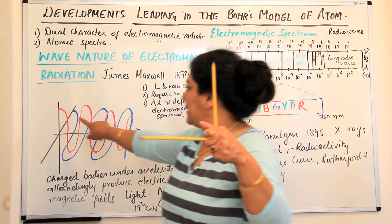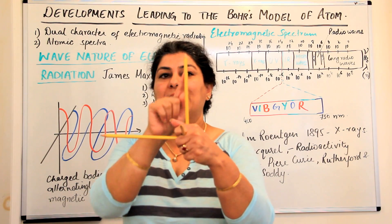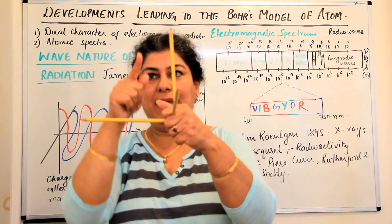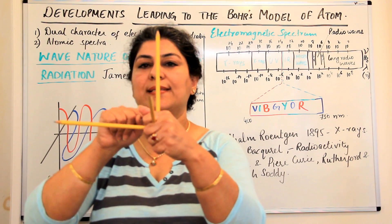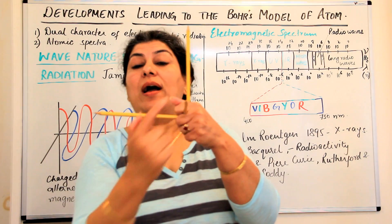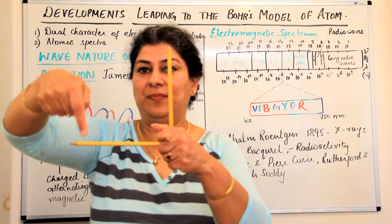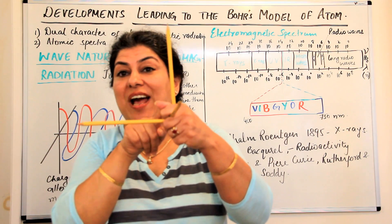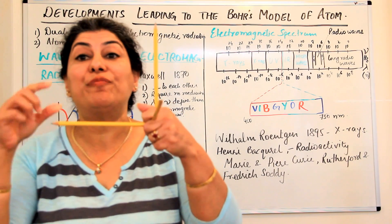In an electromagnetic radiation, when the charged particle is vibrating, it produces an electric field — let us assume along the y-axis — which moves as a wave with a crest and a trough. At the same time, a magnetic field is created along the x-axis. Both the electric and magnetic fields, although in these two directions, are travelling along the third direction — the z-axis — which is the actual direction of propagation of the wave.